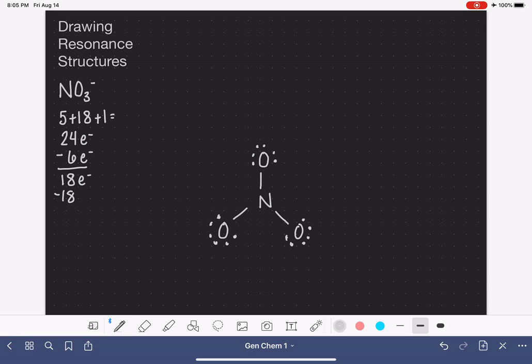That used 18 electrons, which leaves us with no more available electrons to work with. In this situation, we can see that our nitrogen atom in the center only has six electrons around it, which means that it needs two more. We know what to do in this situation. We need to take one of the lone pairs of electrons from an oxygen, and we need to convert that lone pair into a double bond.